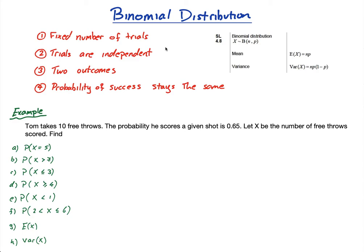Let X be the number of free throws scored. We have a fixed number of trials — 10. The trials are independent; we're going to assume they're independent, even though you could argue that confidence affects subsequent shots. Two outcomes: he's either going to score or he isn't. And the probability stays the same.